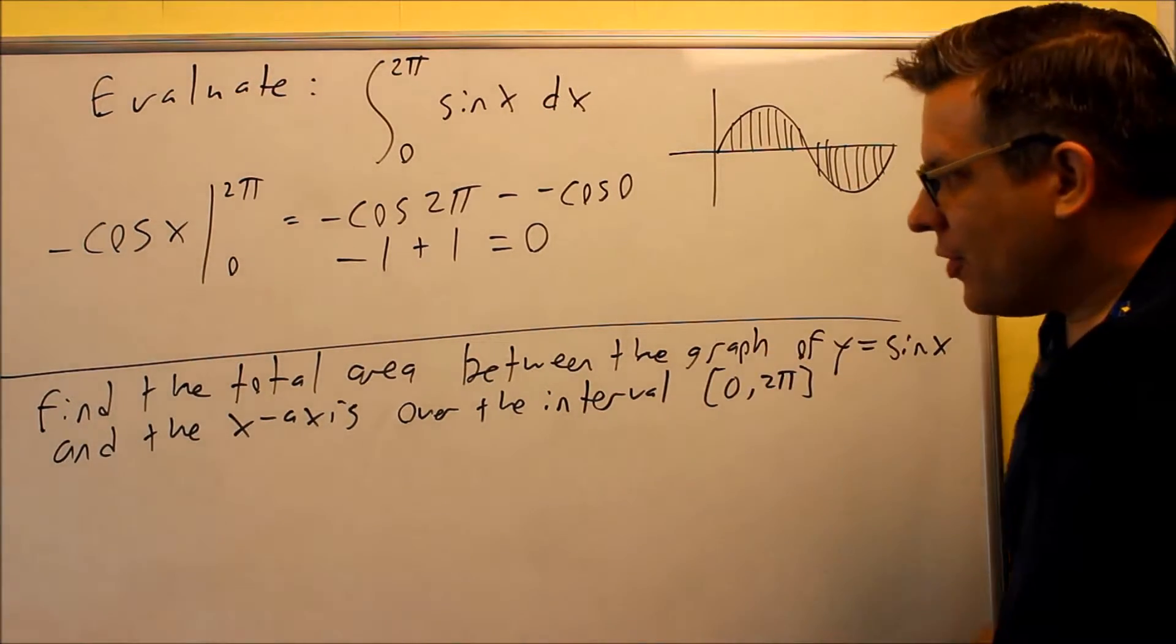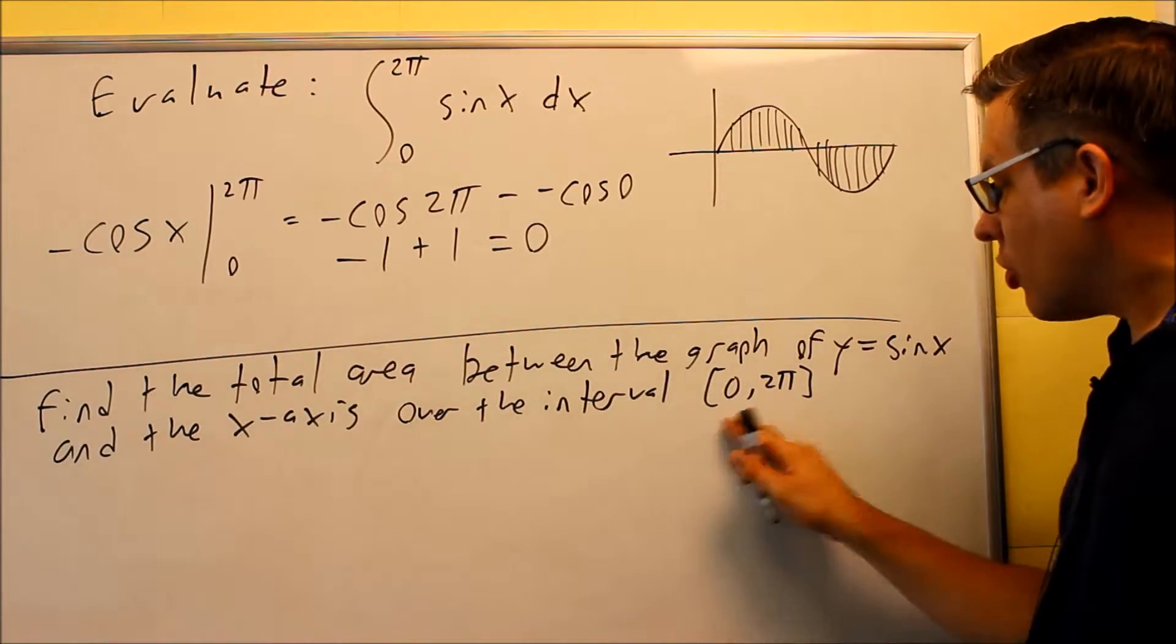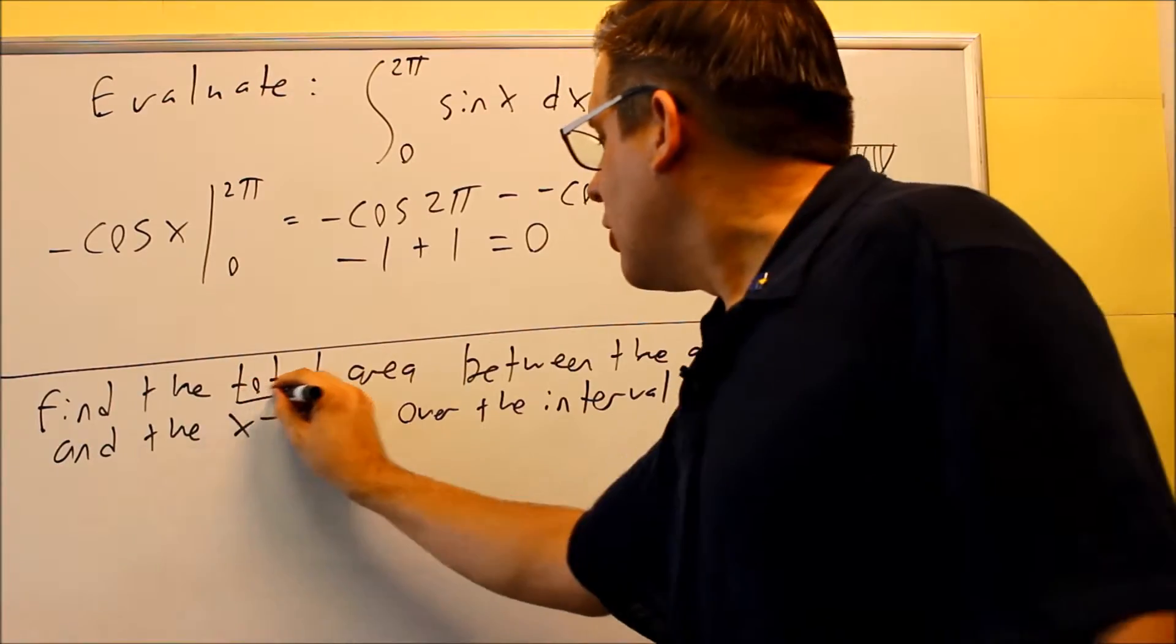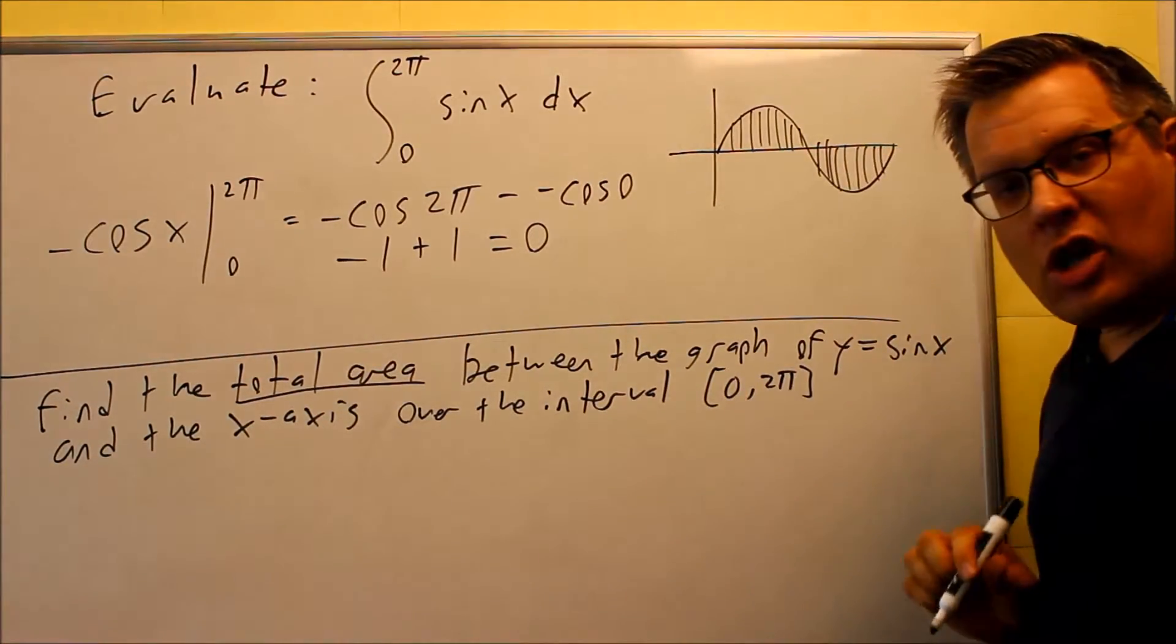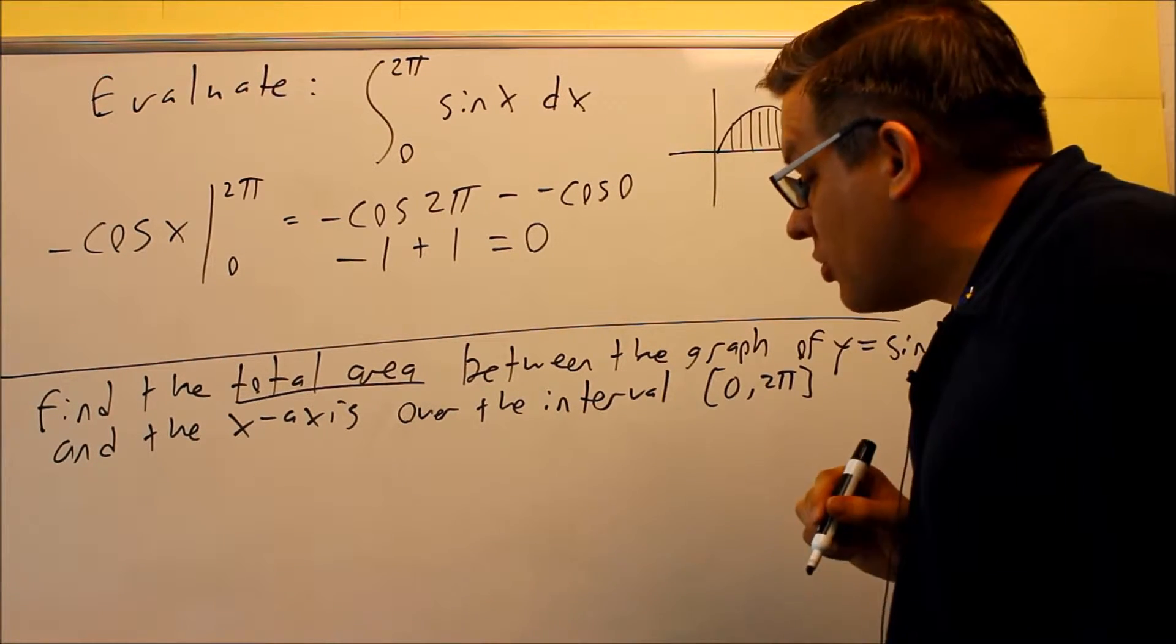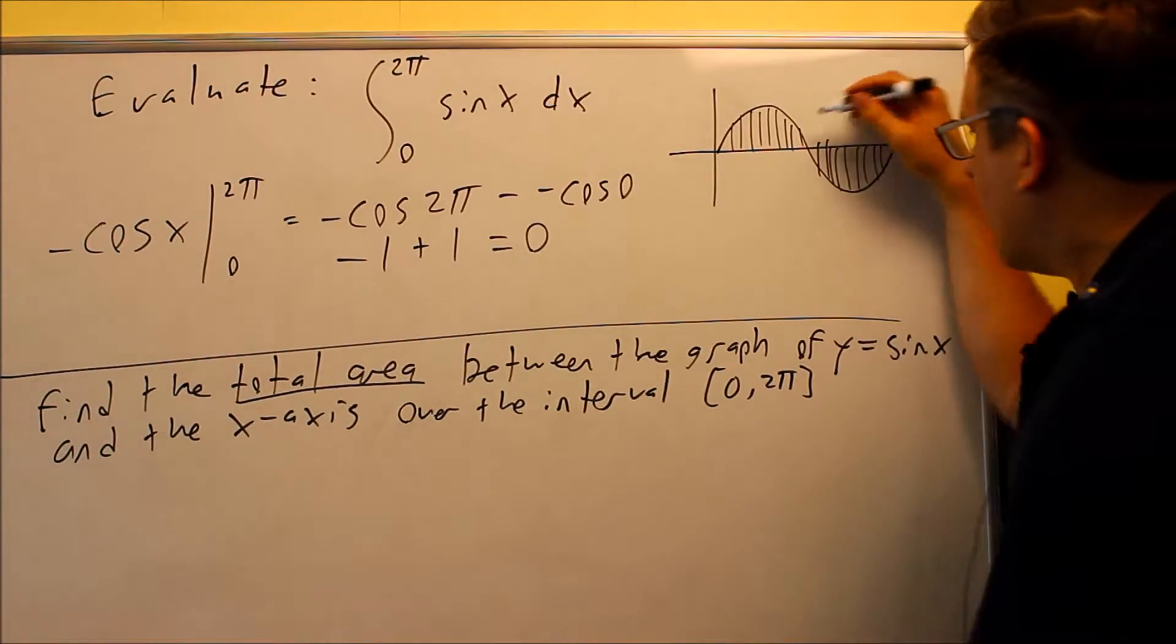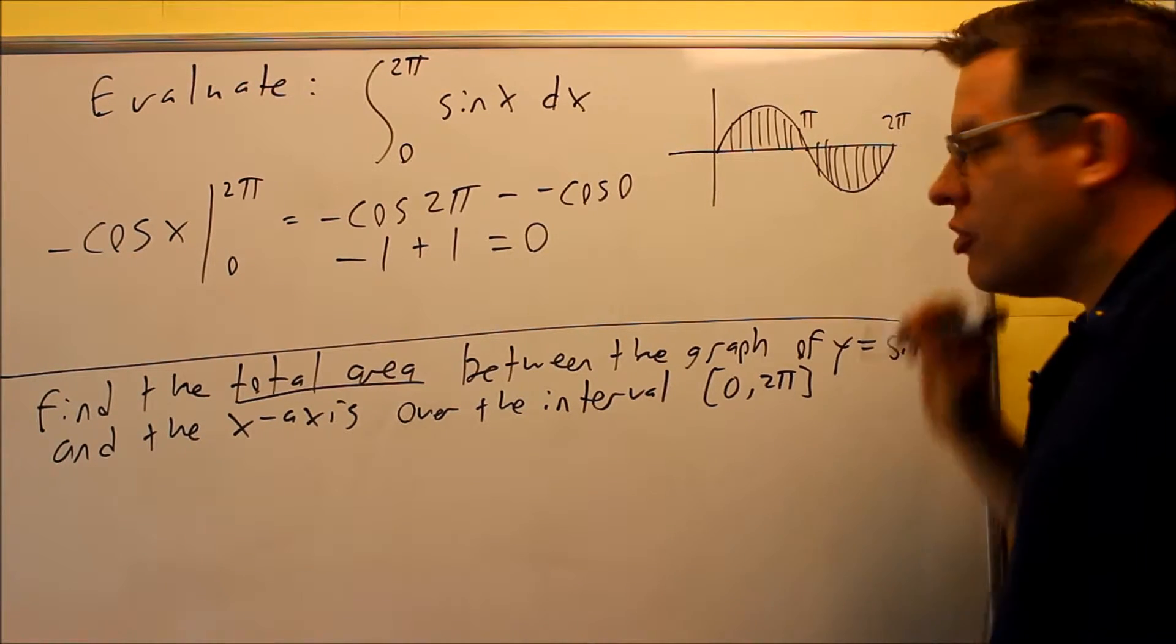Now, this problem is worded, it's got the same function, sine x, and you're still going between 0 and 2π. However, it's got this word here. It says let's find the total area between the graph over this interval here. What that involves doing is breaking this up into two separate intervals. So you're going to break it up to where the positive and negative area is split. In this case on the graph, that's going to be at π right here.